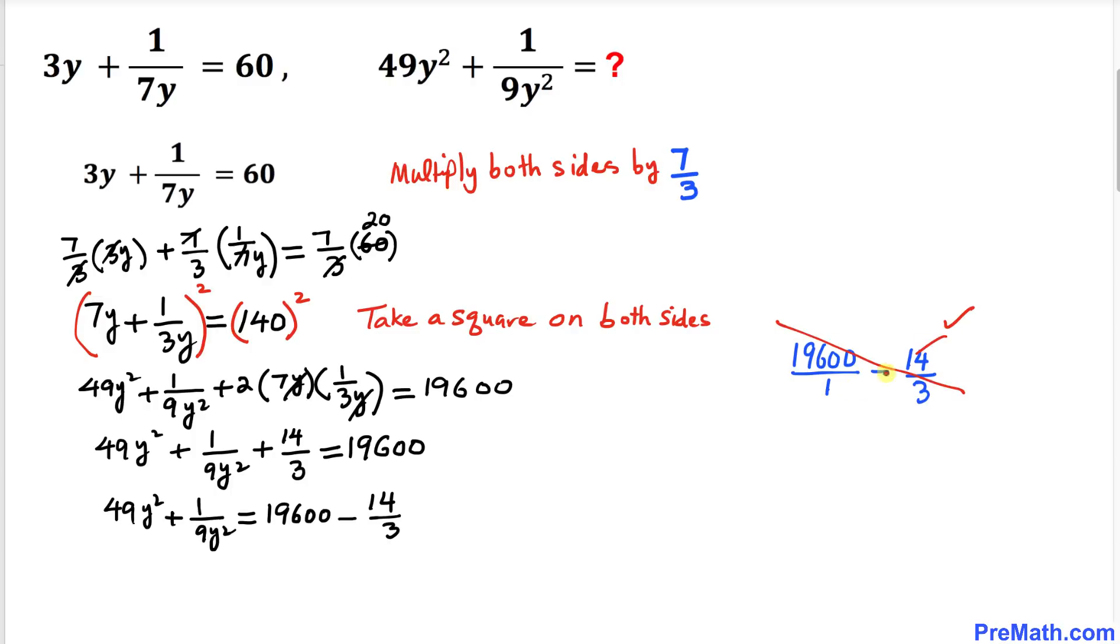3 times 19,600 gives us 58,800, minus 1 times 14, which is 14. The denominator is 1 times 3, which is 3. Subtracting gives us 58,786 divided by 3.